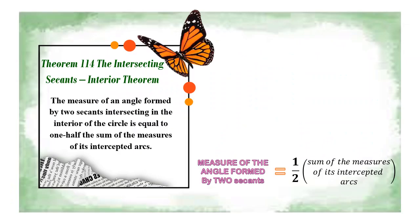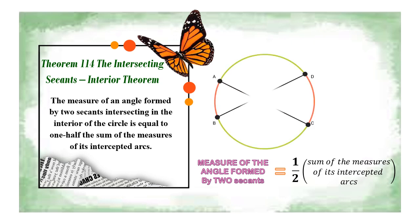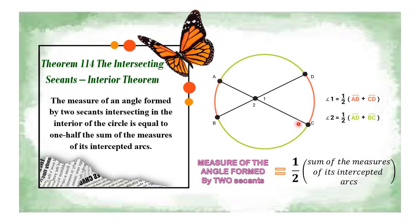Let us have our example. For Theorem 114, we have this illustration and you are asked to find the measure of angle 1 or angle 2. Based on the theorem, the formula is one-half the sum of the measures of its intercepted arcs. For angle 1, extending the sides, we can see arc AB and arc DC as its intercepted arcs. For angle 2, extending the sides, we would have arc AD and arc BC.